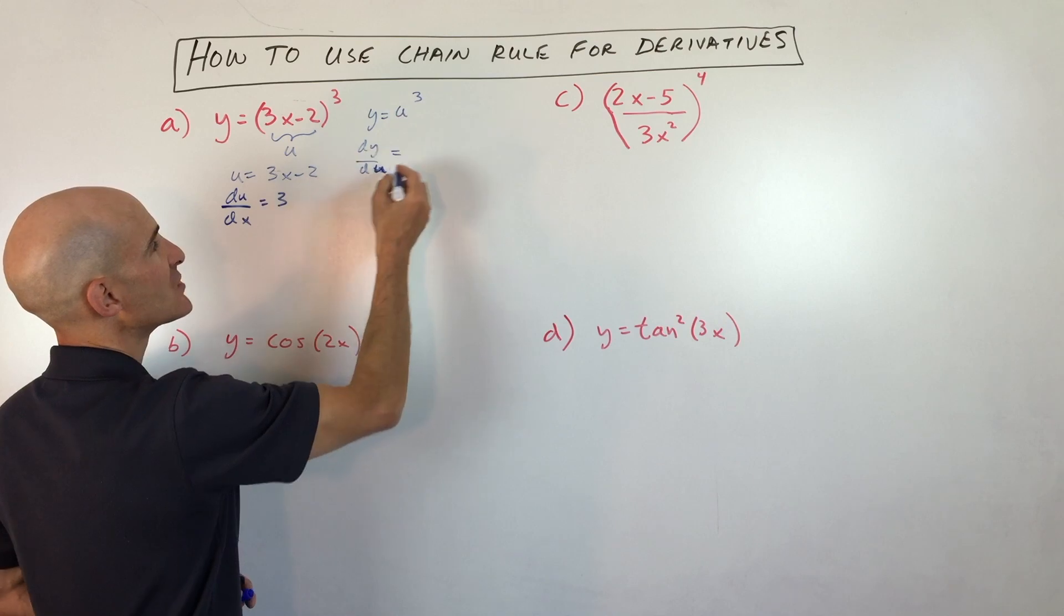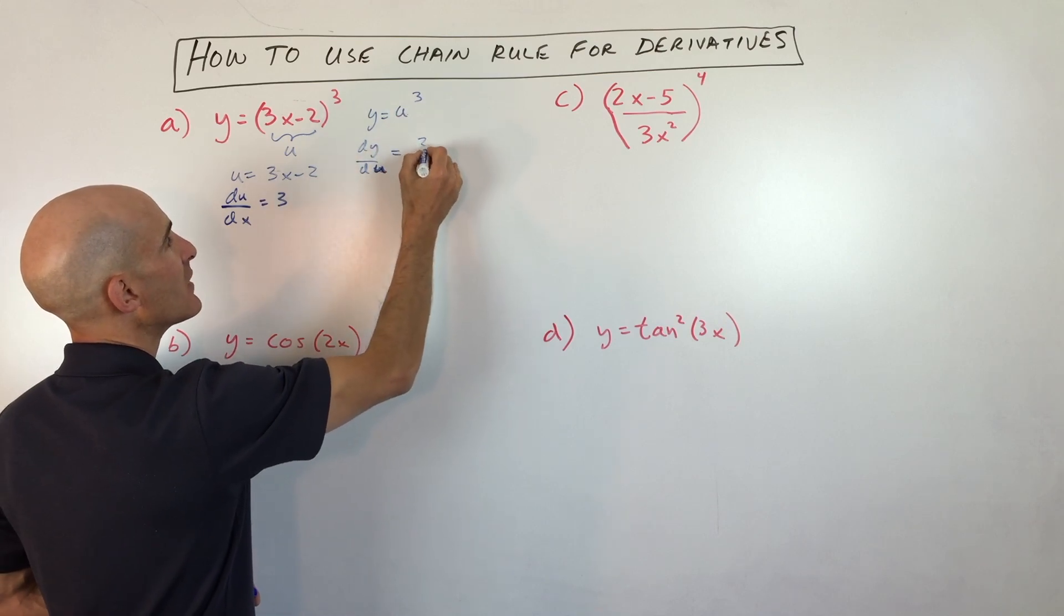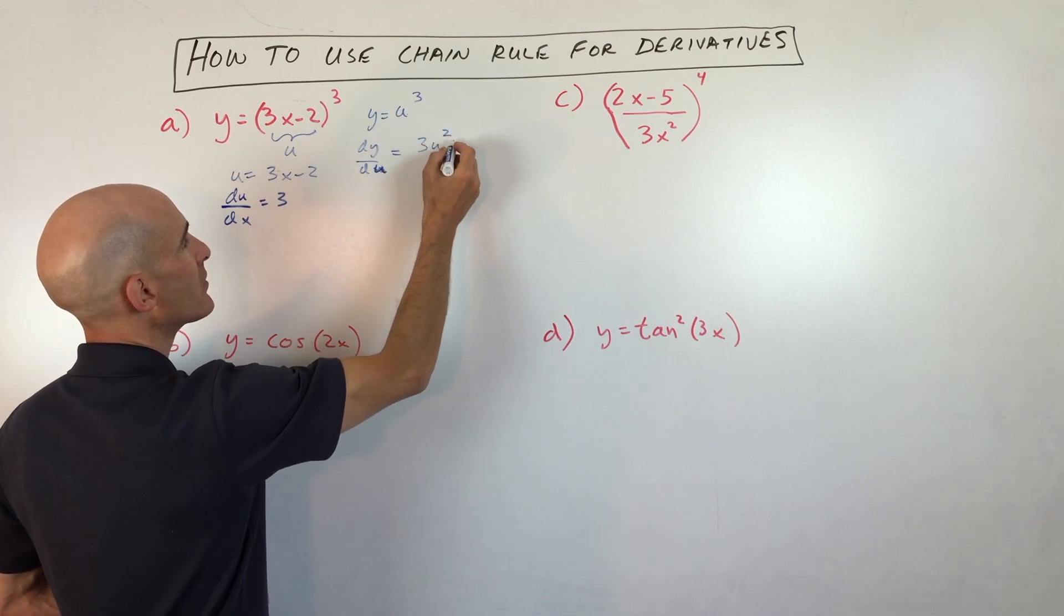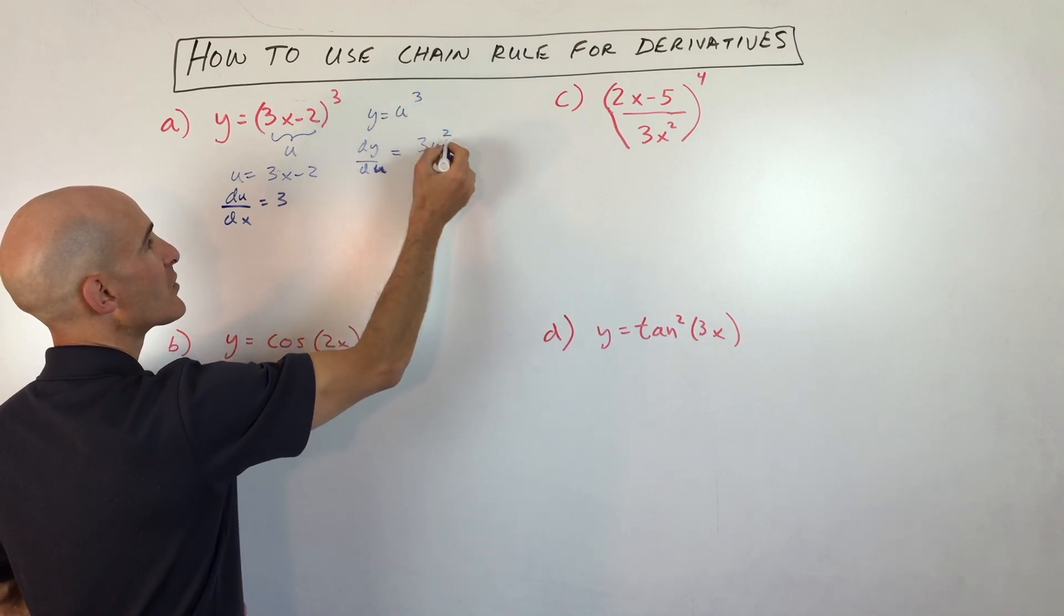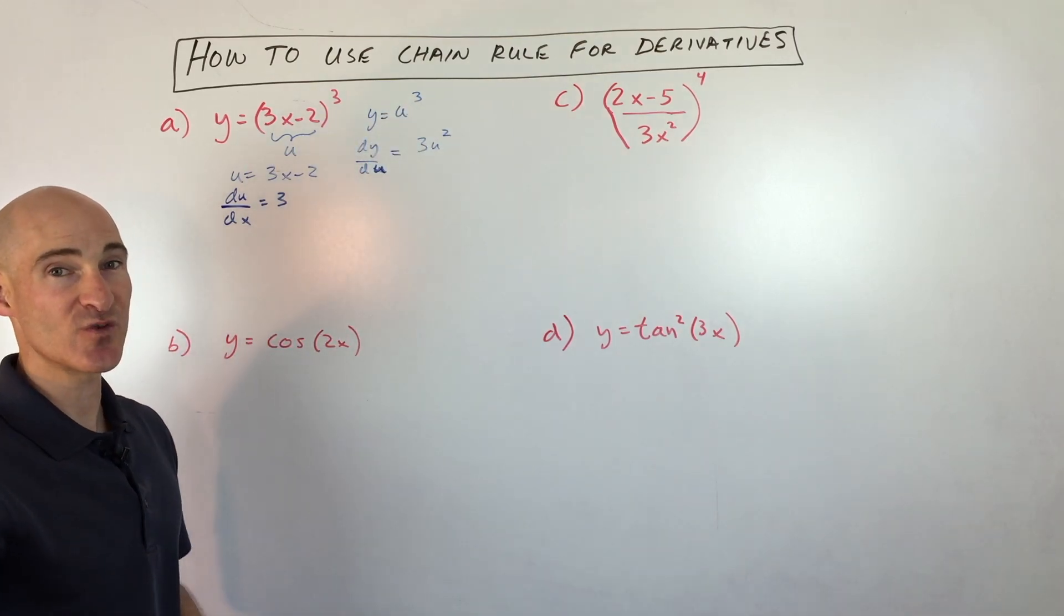We're taking the derivative of y with respect to the variable u, and we get 3u squared. Because we're bringing down the 3 and subtracting 1 from the exponent.